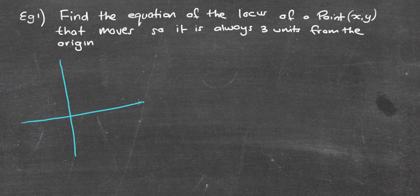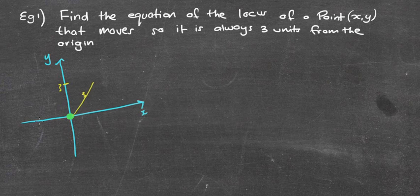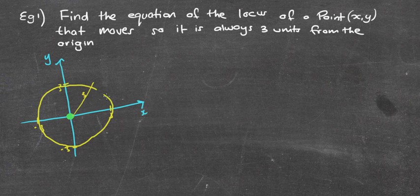I'm going to redraw the x and y axis and draw the origin in the middle. We're looking at that point (x, y) — it could be three units here, three there, three there, three here — it can be three anywhere but it's always going to be three units from the origin. As seen from the last example, that's going to end up being the equation of a circle.